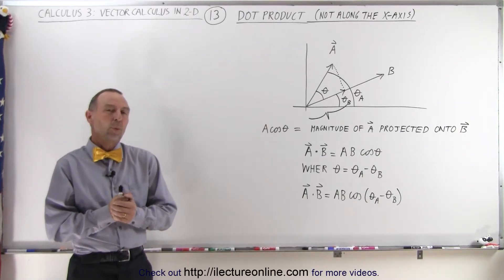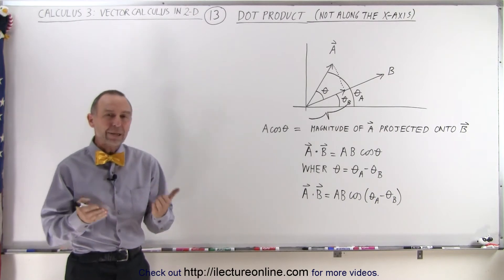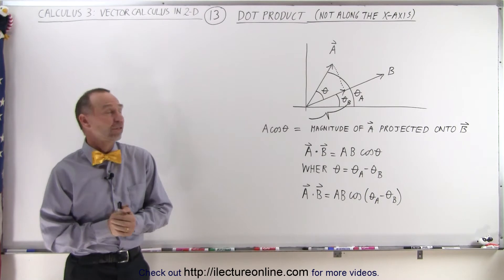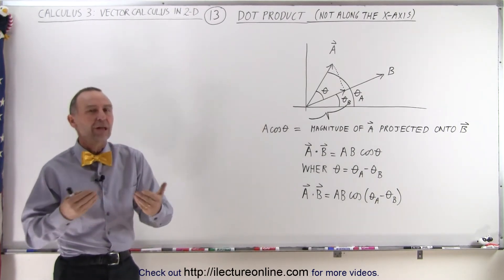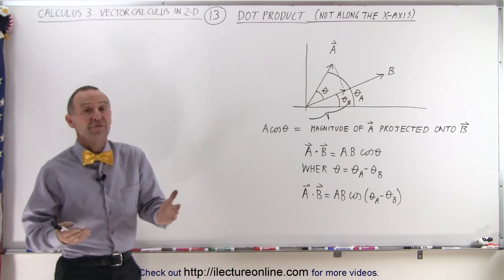Welcome to ElectronLine. What if we have to do a dot product between two vectors and neither one of the two vectors is pointing along the positive x-axis like we have in this example right here? What does the dot product look like now? And it turns out it doesn't look any different at all.